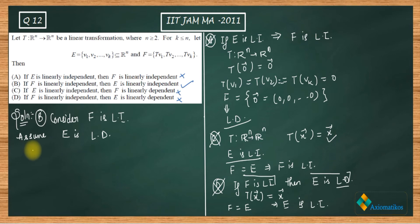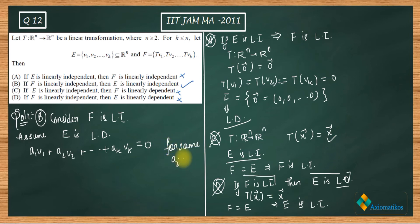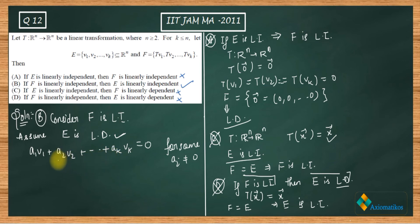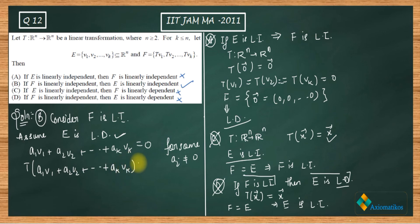Since E is assumed to be linearly dependent, by definition there exist constants a₁, a₂, ..., aₖ — not all zero — such that a₁v₁ + a₂v₂ + ... + aₖvₖ = 0, where at least one aᵢ is non-zero. Now I will apply the transformation T to both sides of this equation.